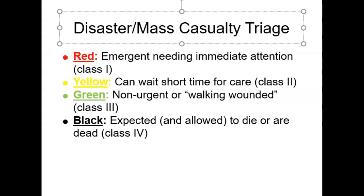A patient with massive head trauma would receive a black tag. A patient with airway obstruction would receive a red tag, with the hope that we could clear the obstruction and restore their breathing. Patients with sprains or strains receive a green tag. Patients experiencing signs and symptoms of shock receive a red tag. Patients with extensive full-thickness body burns would be considered black-tagged.